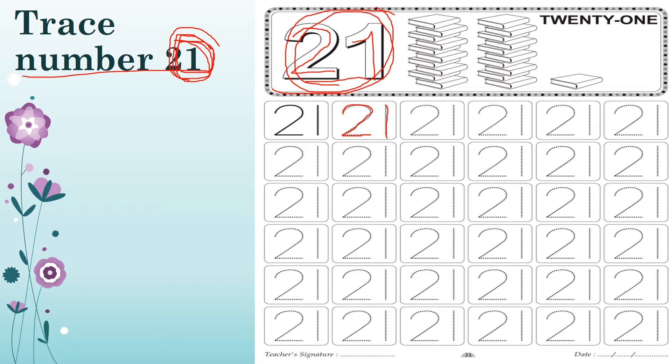Let's try to practice writing number 21 without tracing. Let's start — one, two, and then one, two, three. So this is your number 21.